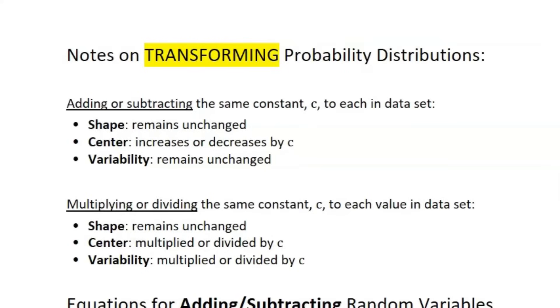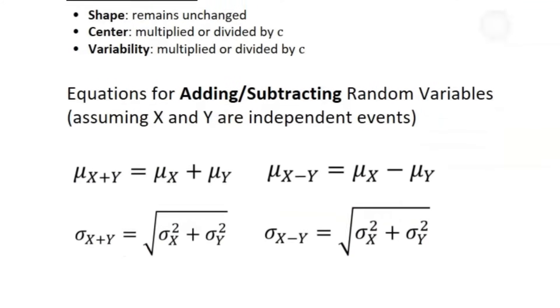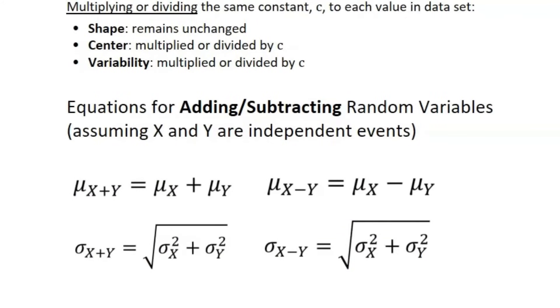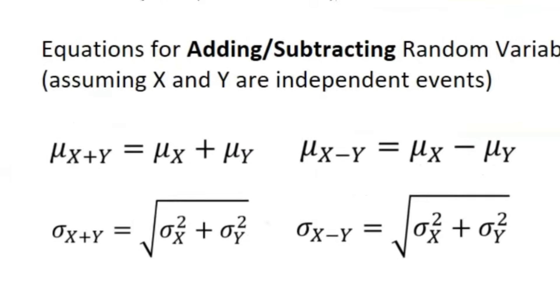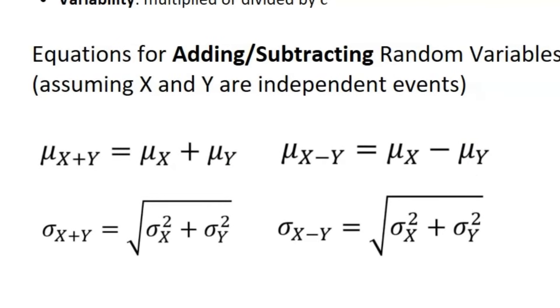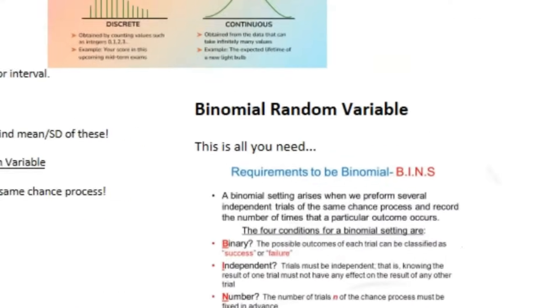So here are a couple more equations you need to know when you are adding or subtracting sets of data for random variables, assuming that event A and X are independent events. So you can see we have the equation for finding the mean and median of X plus Y and X minus Y, respectively. So make sure you have these equations down.